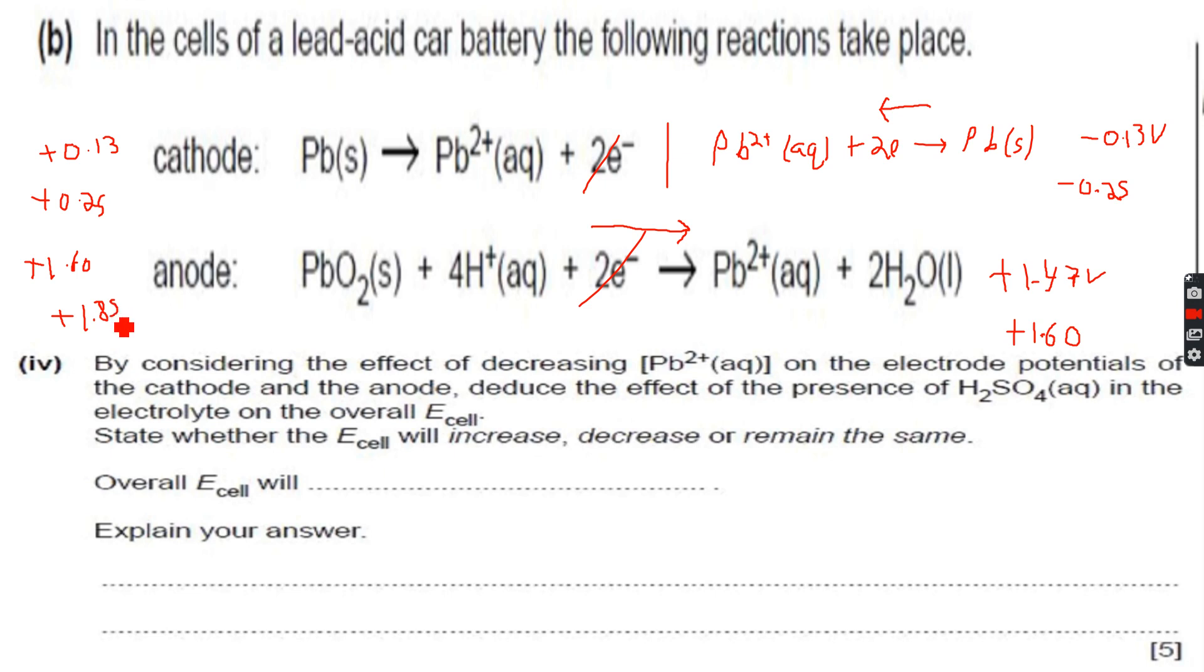So we get plus 1.85. And initially, if you remember, we calculated E cell to be 1.60. So this means that E cell has increased. So we will write increase over here. And in the answer, we will explain whatever I explained to you right now,